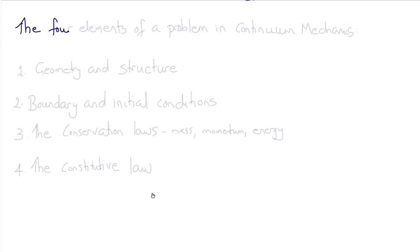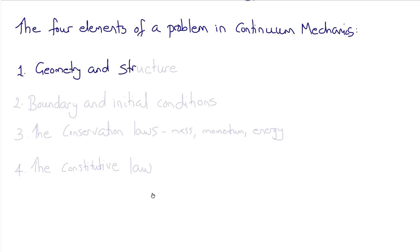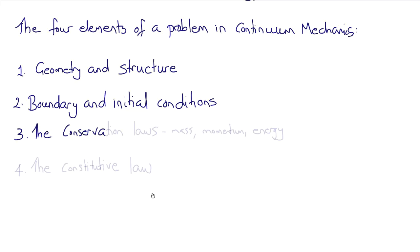Now that we know the governing equations of continuum mechanics — the conservation laws and the constitutive law — we can outline all four elements of a problem in continuum mechanics. First, you need the geometry and some information about the structure of the body of interest. Second, you need the boundary conditions and, if it's a time-varying problem, initial conditions. Third, we need the conservation laws — conservation of mass, momentum, and energy — which are universal for all material continua. And finally, we need the constitutive law, which is specific to the particular material being studied.